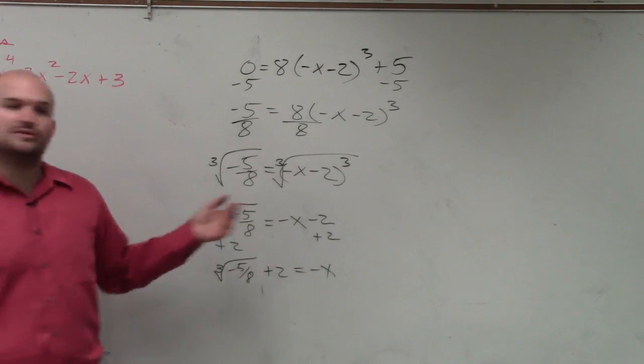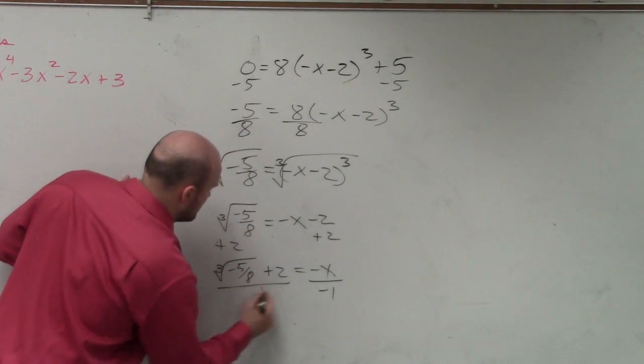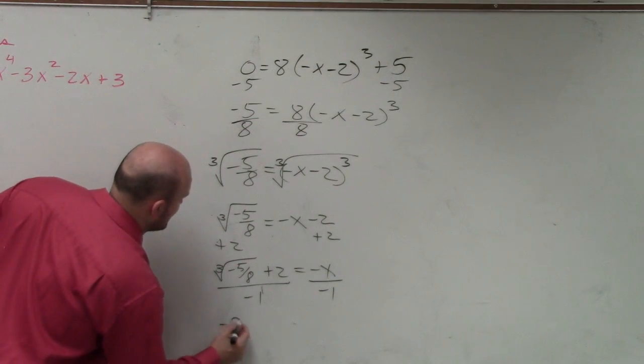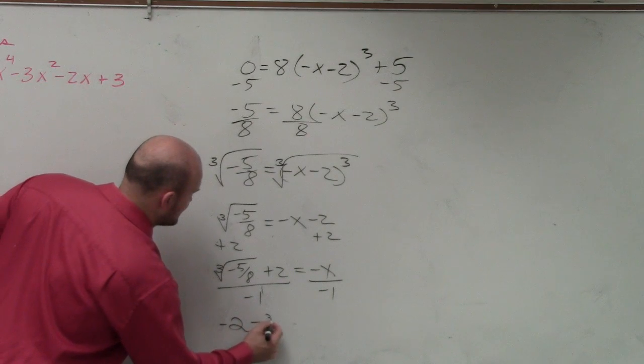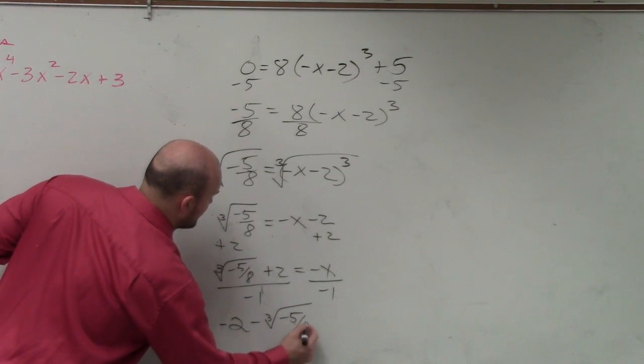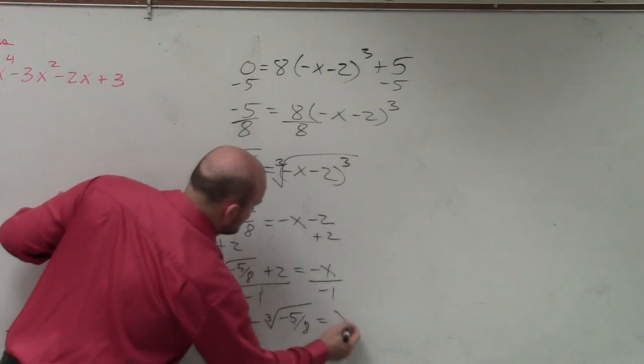Now, again, what else do we do to solve for x? You divide by negative 1. So my final answer I would write as negative 2 minus the cube root of negative 5 over 8 equals x.